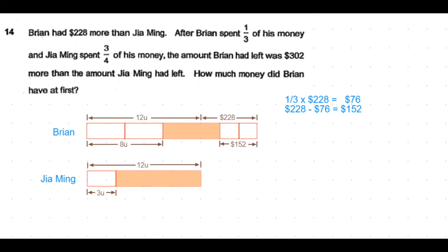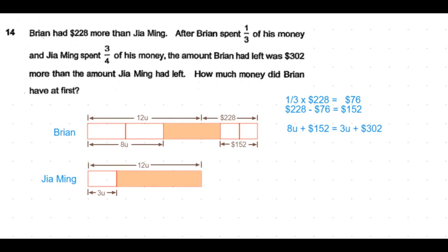Now Brian has $302 more than Jia Ming. So Jia Ming is left with 3 units plus $302, which should be equal to what Brian has now, which is 8 units plus $152.